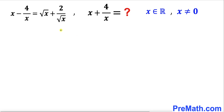Welcome to pre-math. In this video we have got this interesting problem: (x minus 4) divided by x equals the square root of (x plus 2) divided by the square root of x. We are going to find the value of x plus 4 divided by x. Note that x must be a real number and x is not equal to zero.